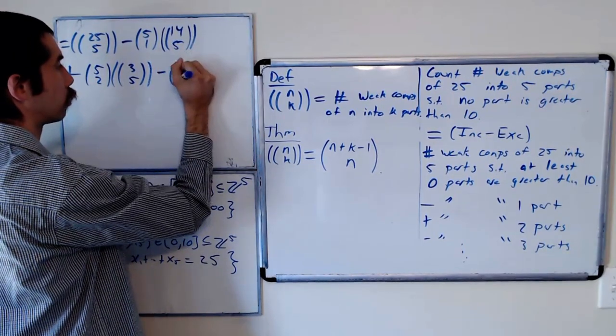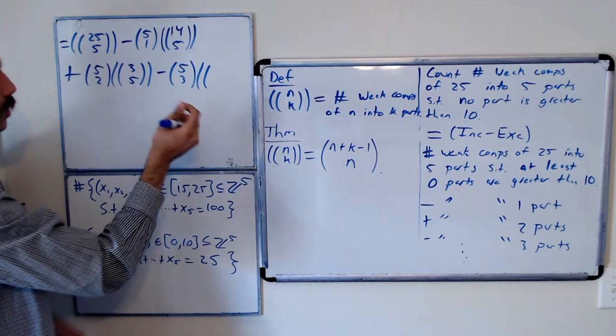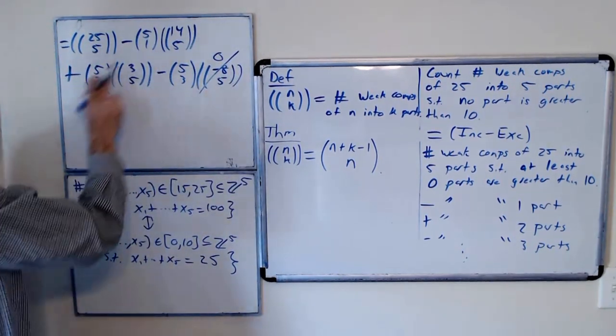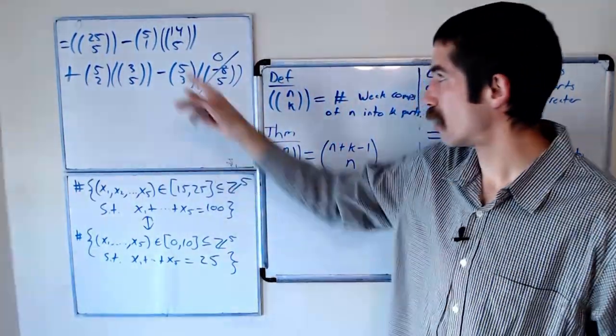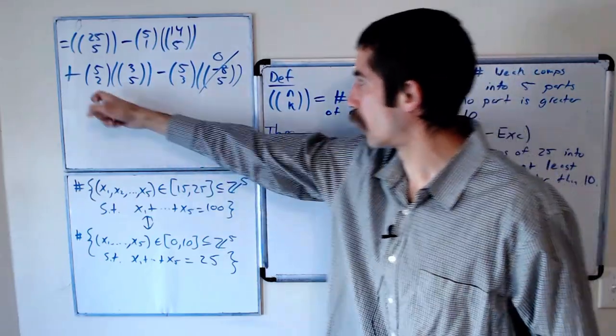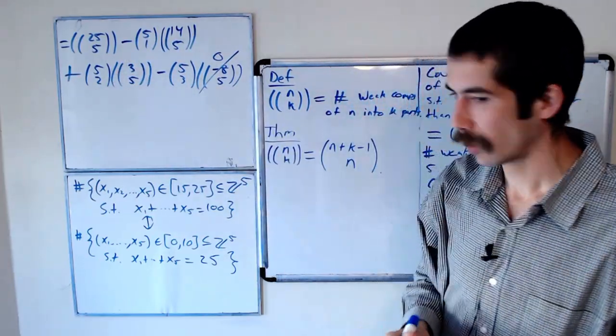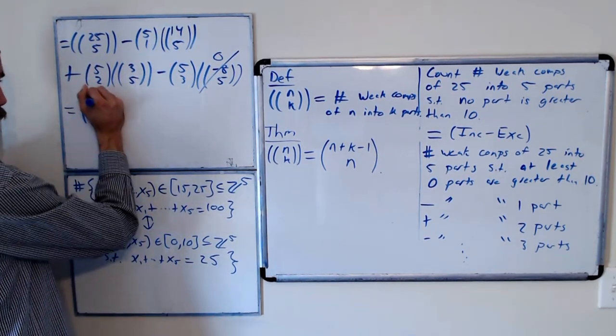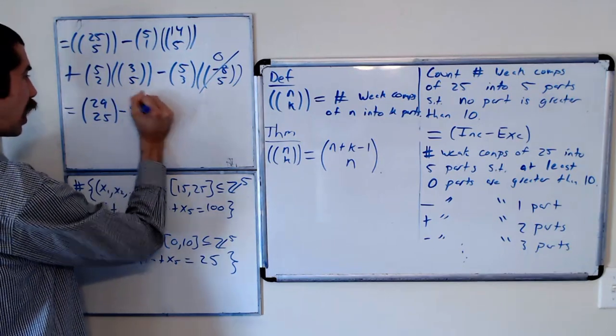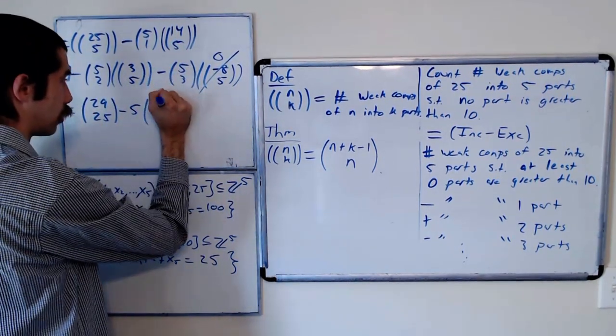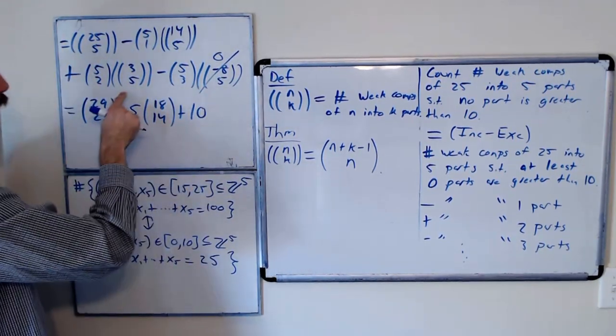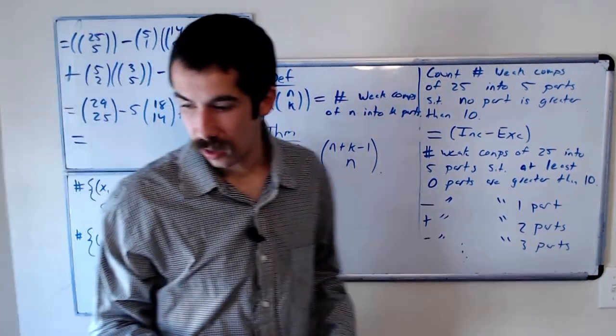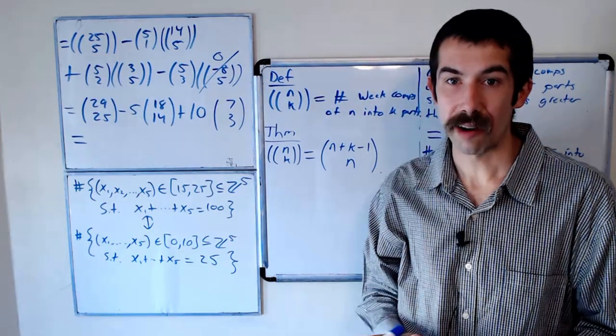Minus 5 choose 3, you can see the pattern, and now this is a weak composition of negative 8 of 5, so this is 0. So it's just going to be this alternating sum: 25 multi choose 5 minus 5 times 14 multi choose 5 plus 5 choose 2 times 3 multi choose 5. And using our theorem we know this is 29 choose 25 minus 5 times 18 choose 14 plus 10 times 7 choose 3. And you can type all of this into a calculator and get the final answer of 8,801.